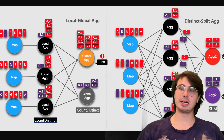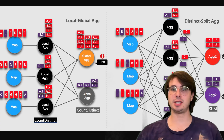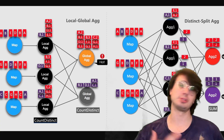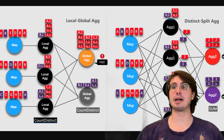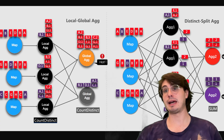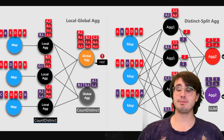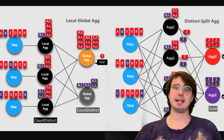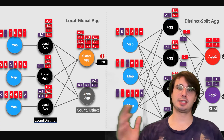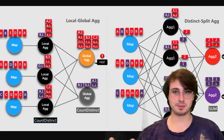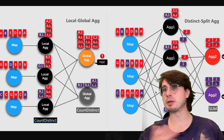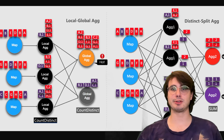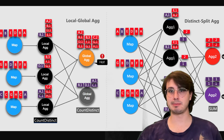Monitor network buffer usage — if it's too high and you're spending a lot of money on network buffers without any back pressure, spin the network buffers down. Adjust the buffers per channel and floating buffers per gate based on your job's communication patterns.